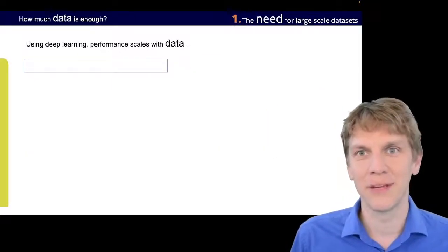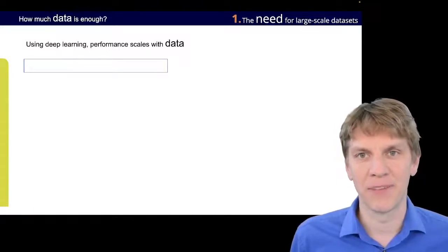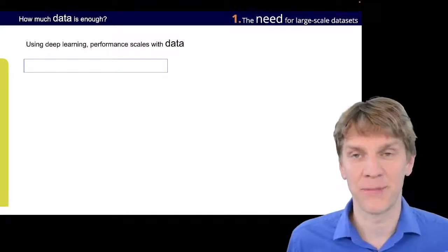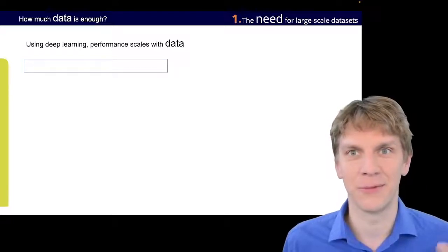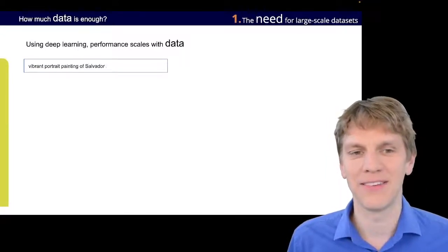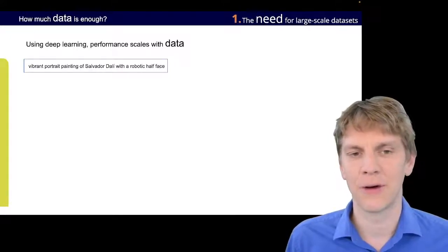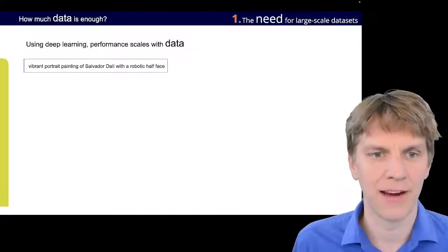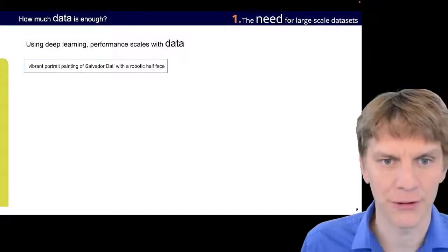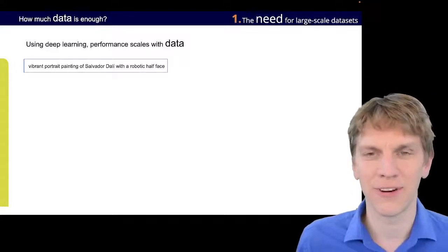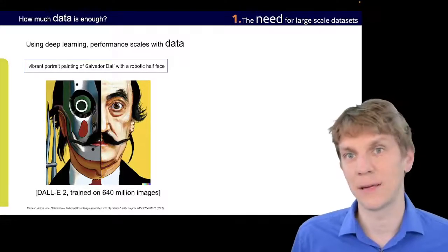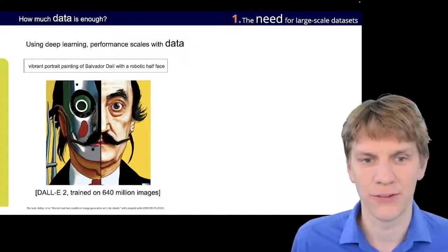When we look a little bit further and look into text-to-image conversion, something which has become very popular in recent days with the large diffusion models, we can see that, for example, we can now query a model something like vibrant portrait painting of Salvador Dali with robotic half-face, and we then get a picture like this. So this is courtesy of DALL-E 2.